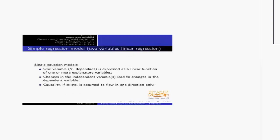In the single regression model, we have one dependent variable expressed as a linear function of one or more explanatory variables. If we have one explanatory variable, we call it simple regression; if there are two or more, we call it multiple regression. Changes in the independent variable lead to changes in the dependent variable, and we assume the flow goes in one direction only — from X to Y.